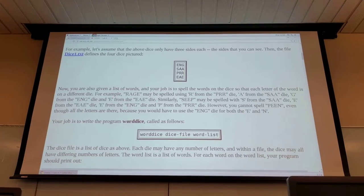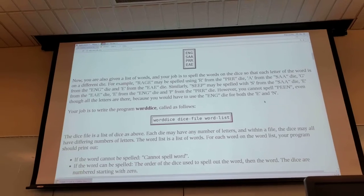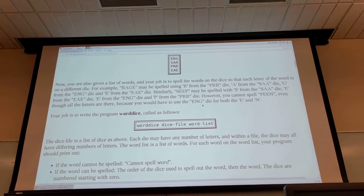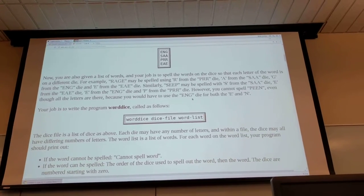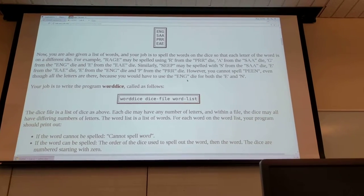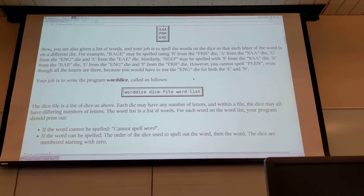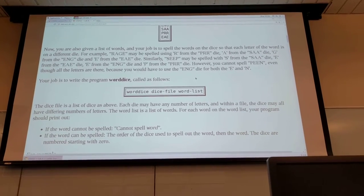So your job is to write the program word dice which is called as follows. You give it the program name and then two files. The first file contains the dice descriptors which was specified above and the second word list is the list of dictionary words you're trying to spell.